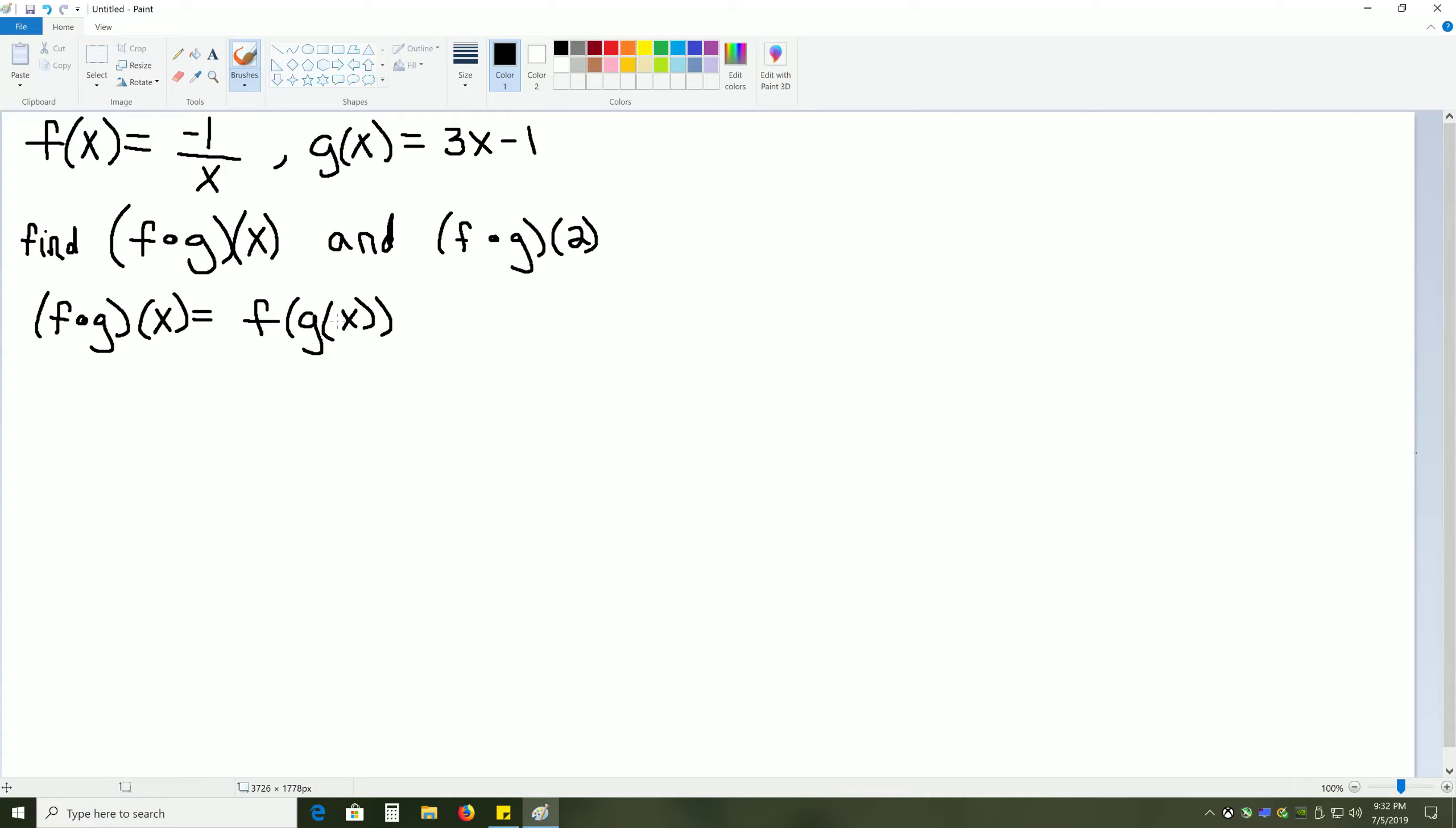So f of g of x, we're going to replace the g of x to begin evaluating this. g of x is the same thing as 3x minus 1. So we get f of 3x minus 1 will give us FOG, or f of g of x. So everywhere we see an x in the original function f of x, we will replace it with this 3x minus 1.